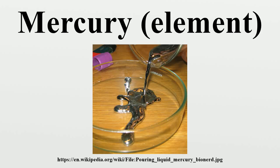Mercury ores can be extraordinarily concentrated considering the element's abundance in ordinary rock. The richest mercury ores contain up to 2.5% mercury by mass, and even the leanest concentrated deposits are at least 0.1% mercury. It is found either as a native metal or in cinnabar, corderoite, livingstonite and other minerals, with cinnabar being the most common ore. Mercury ores usually occur in very young orogenic belts where rocks of high density are forced to the crust of Earth, often in hot springs or other volcanic regions.